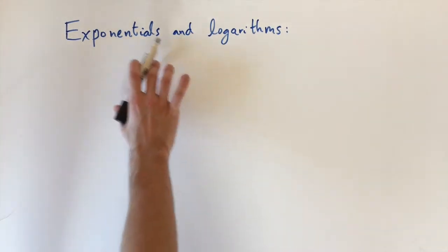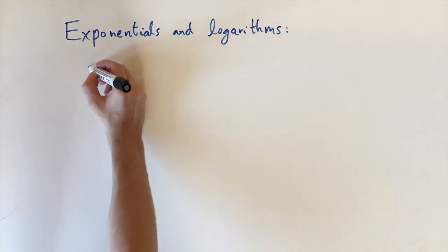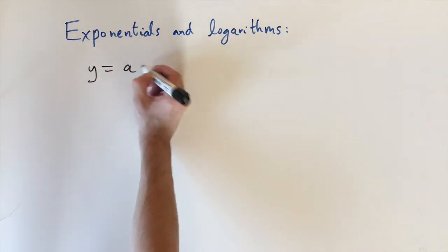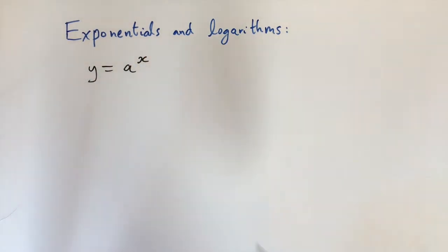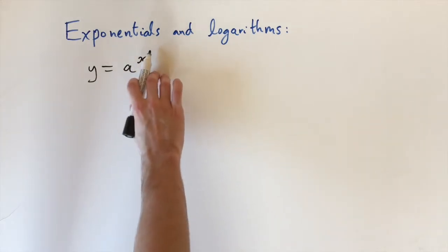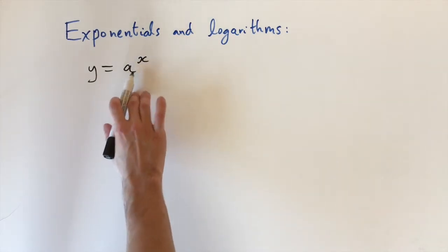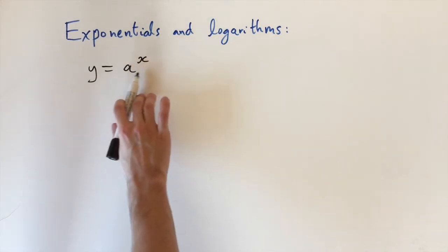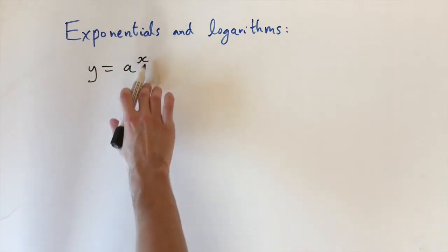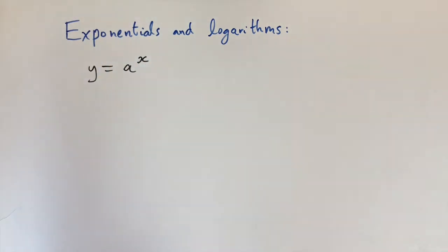Firstly, let's look at exponentials. These are functions of the form y equals a to the power of x, so you've got the variable x raised to the power of another number. The number a is called the base and x is the exponent, which is why they're called exponential functions.